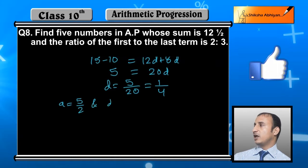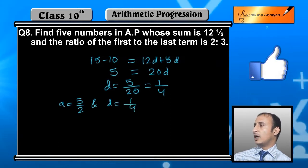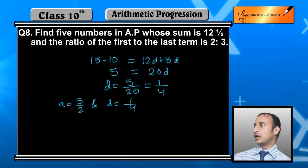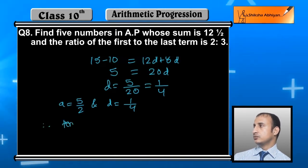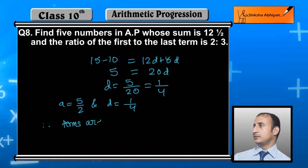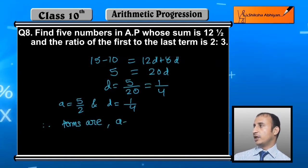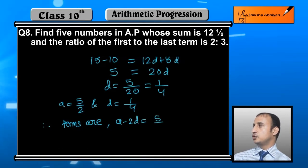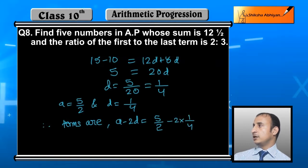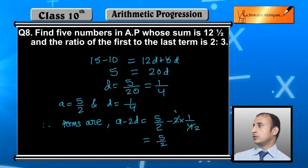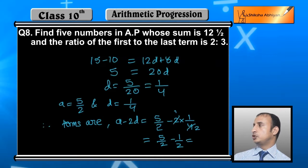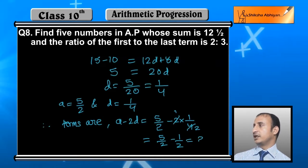a की value 5 by 2 और d की value 1 upon 4 है। अब हम terms निकालते हैं। First term a minus 2d = 5 upon 2 minus 2 into 1 by 4 = 5 by 2 minus 1 by 2 = 2। So first term equals 2।